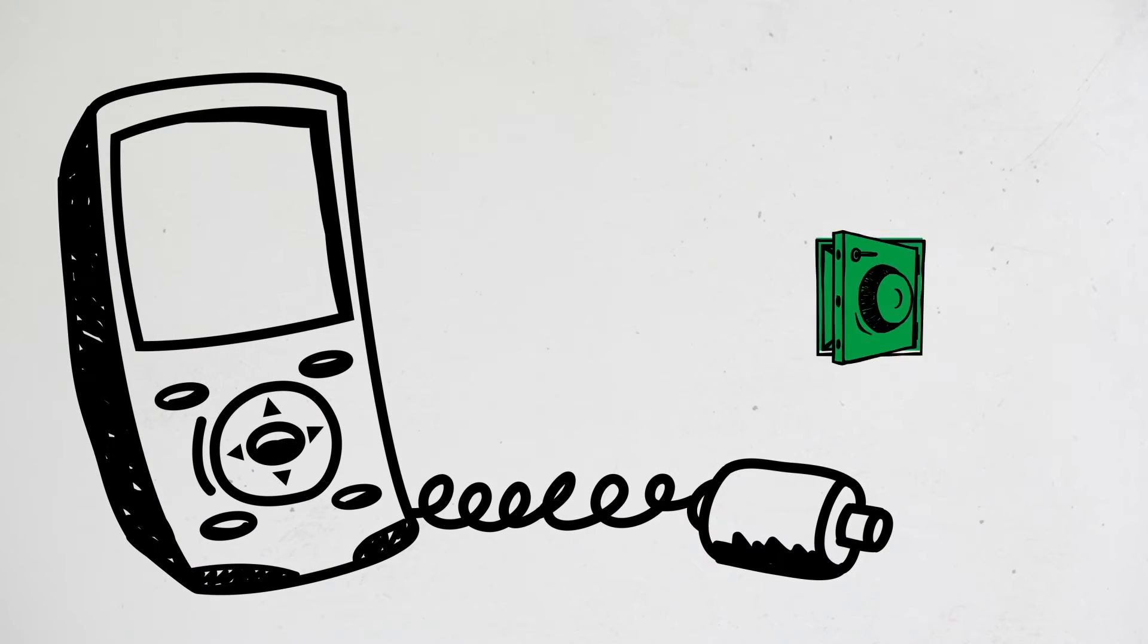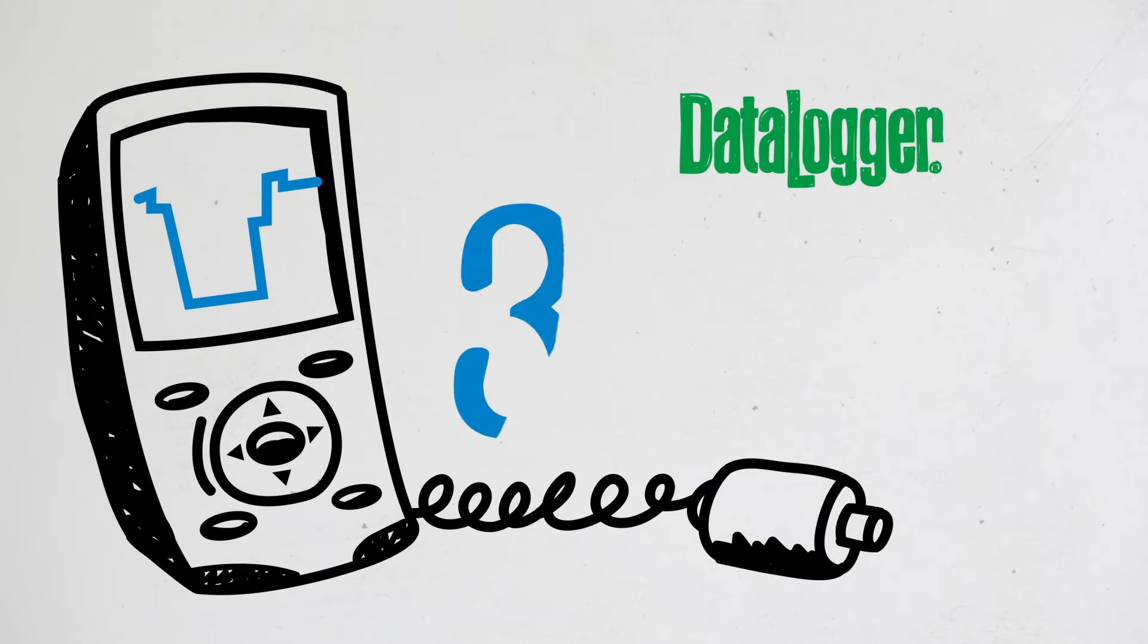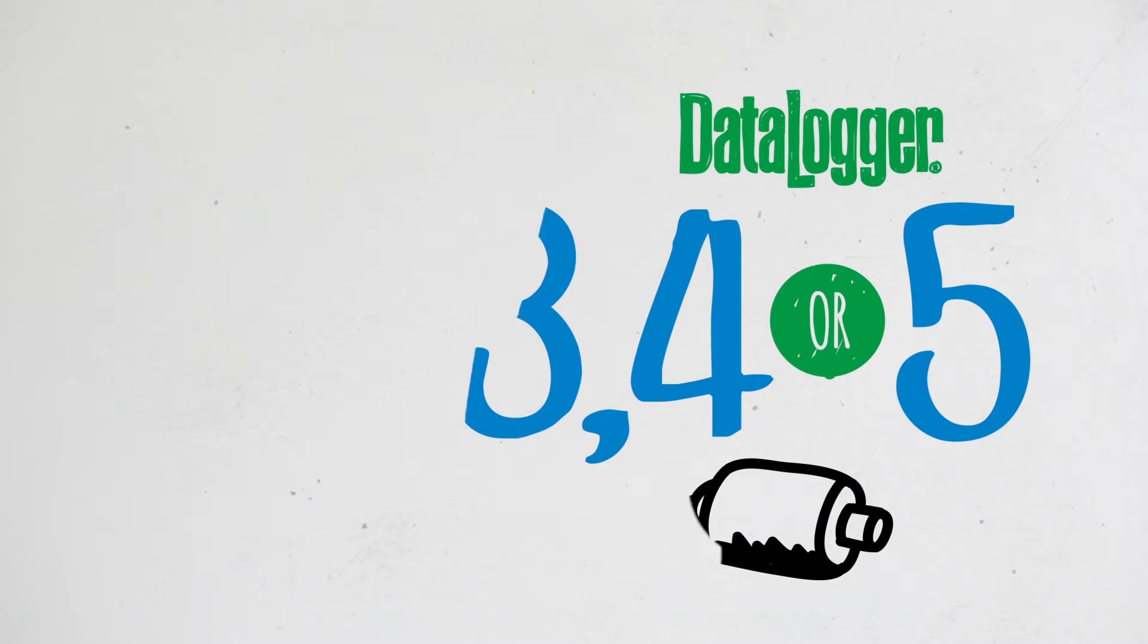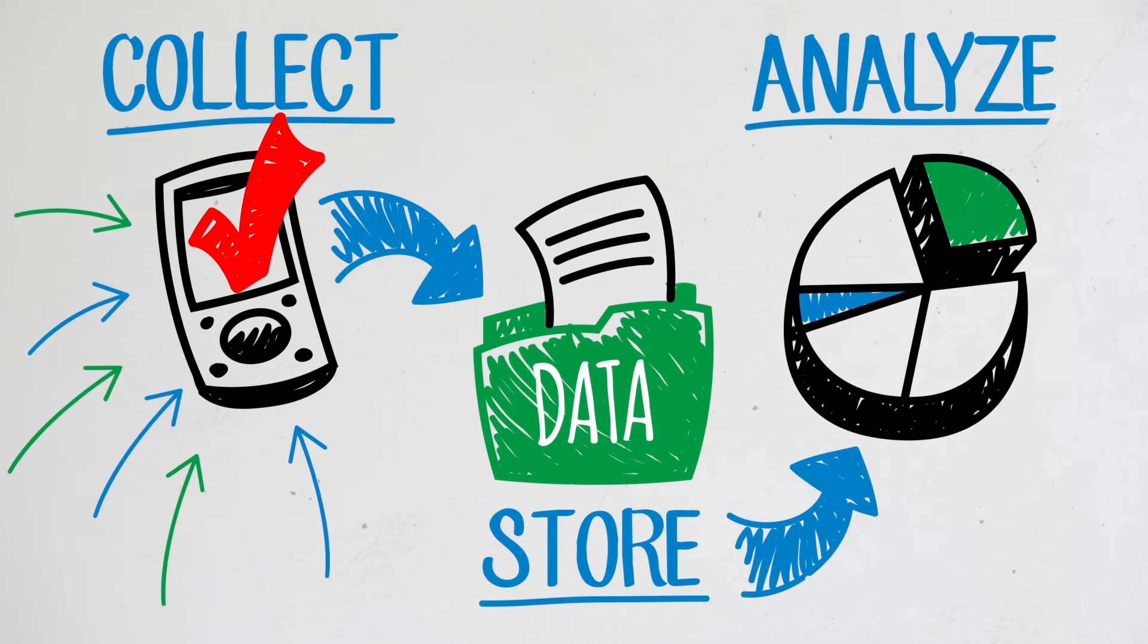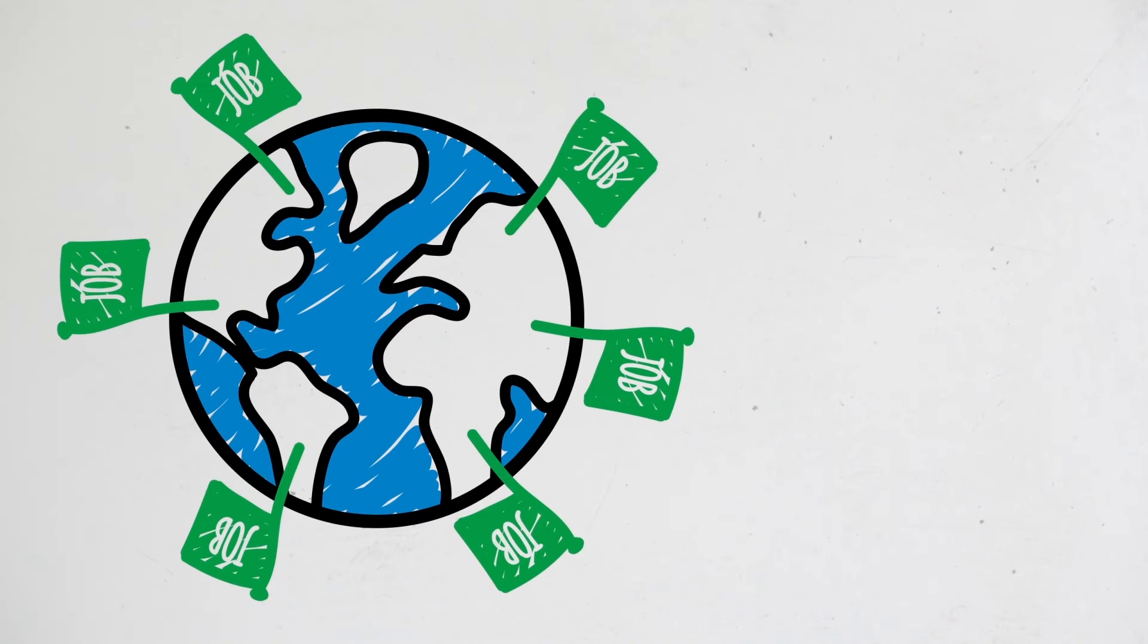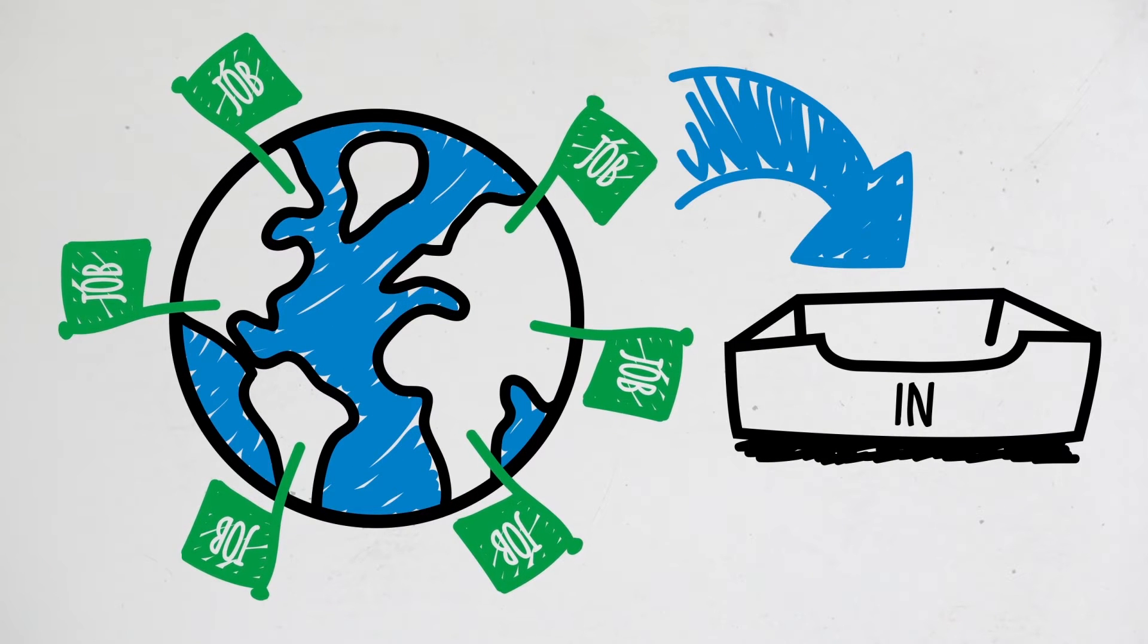The Data Logger Vault is a free online application available to anyone who uses a McElroy data logger 3, 4, or 5. It allows you to collect, store, and analyze fusion joints from all your job sites in one central location.